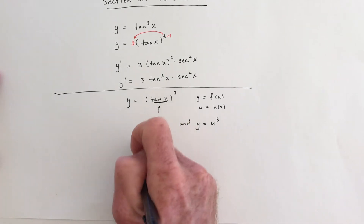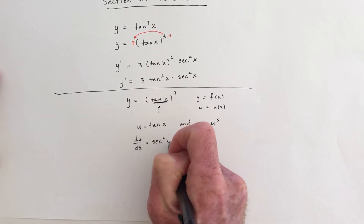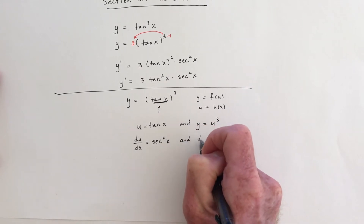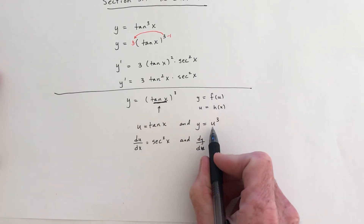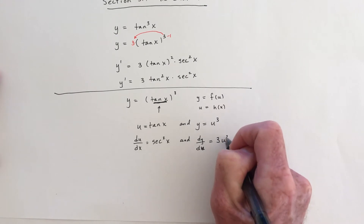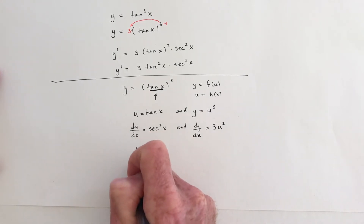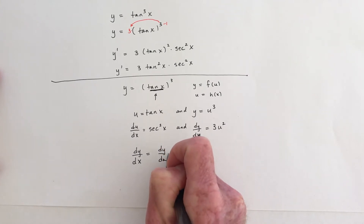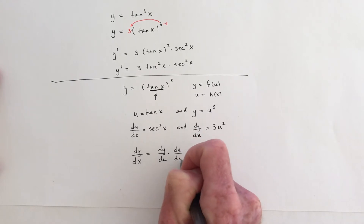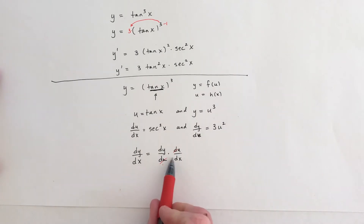Now take the derivative of each. The derivative of u with respect to x — the derivative of tangent is secant squared x. The derivative of y with respect to u is 3u squared. Now put those pieces together: dy/dx equals dy/du times du/dx. In this step the du's cancel, and that's how it equals dy/dx.